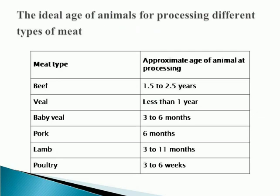The next topic is the ideal age of animals for processing different types of meat. The first meat type we have to discuss is beef, which comes from cattle.